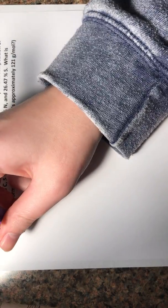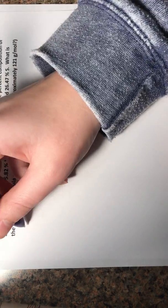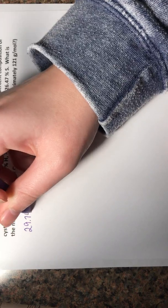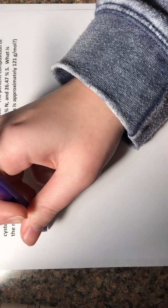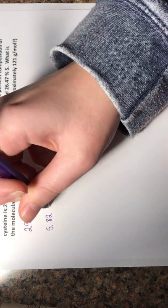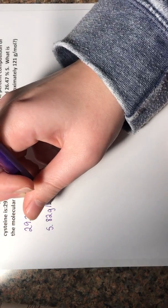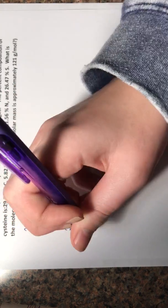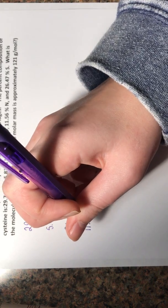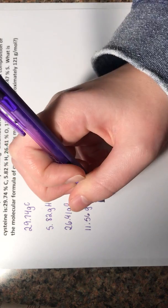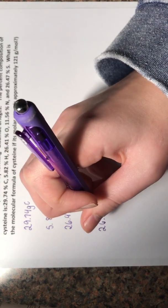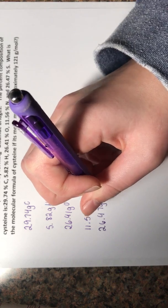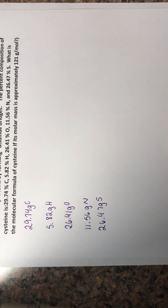Let's start with carbon. We're going to be changing this 29.74, the percentages, to grams. So we'll have 29.74 grams of carbon. We'll just be doing that for all of these. So 5.82 grams of hydrogen, 26.41 grams of oxygen, 11.56 grams of nitrogen, 26.47 grams of sulfur.